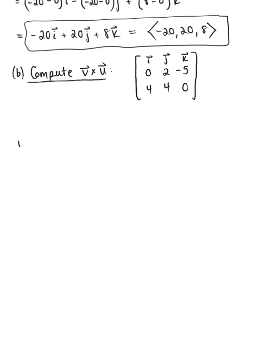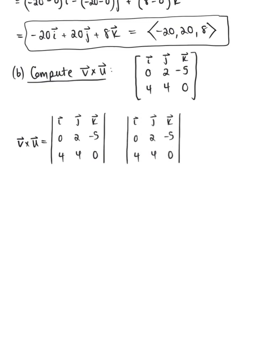We're now ready to apply the determinant with cofactor expansion to find the cross product. So we have i hat, j hat, k hat, 0, 2, negative 5, 4, 4, 0. And again, because we have 3 entries in the first row, we're going to need 3 pieces to our determinant with alternating terms. Our first term is positive, the second term is negative, and the third term is positive.